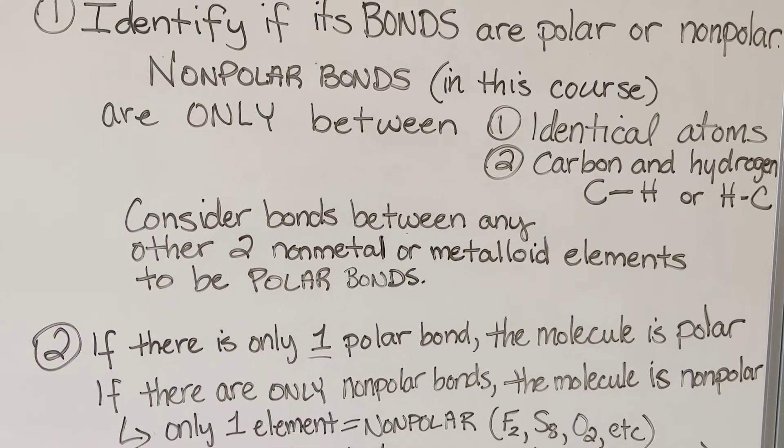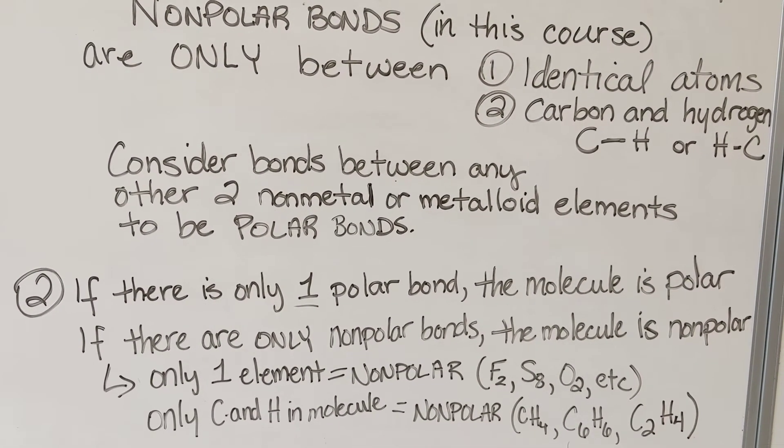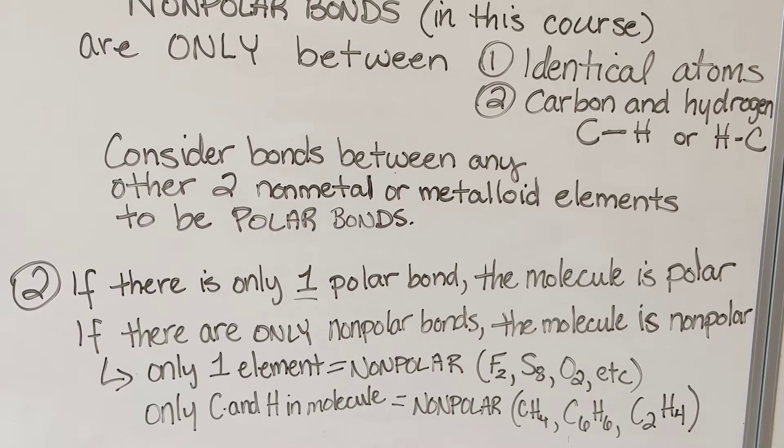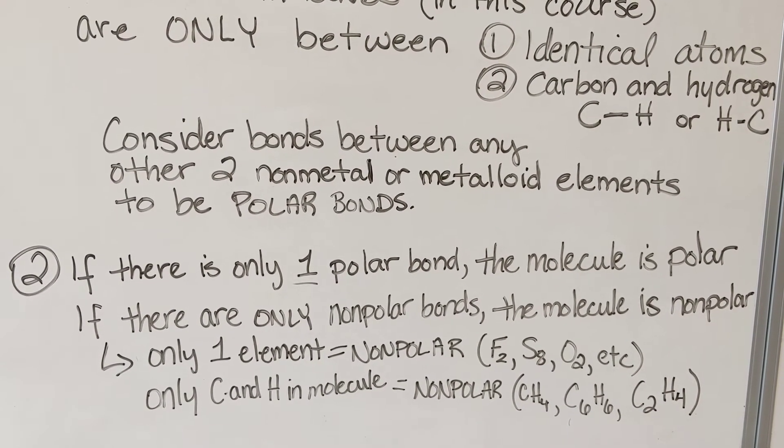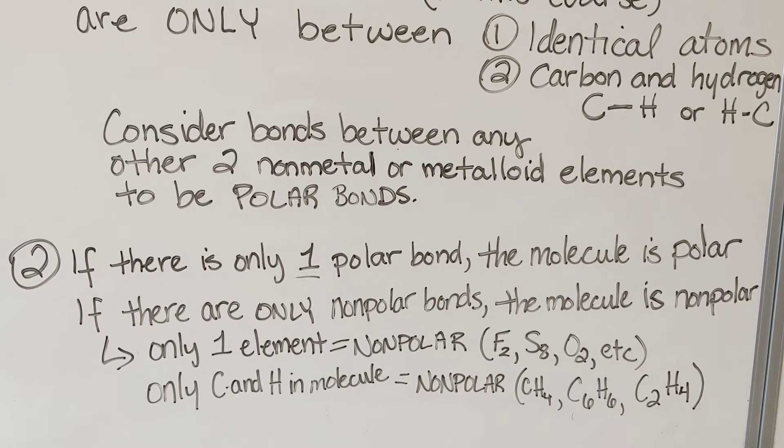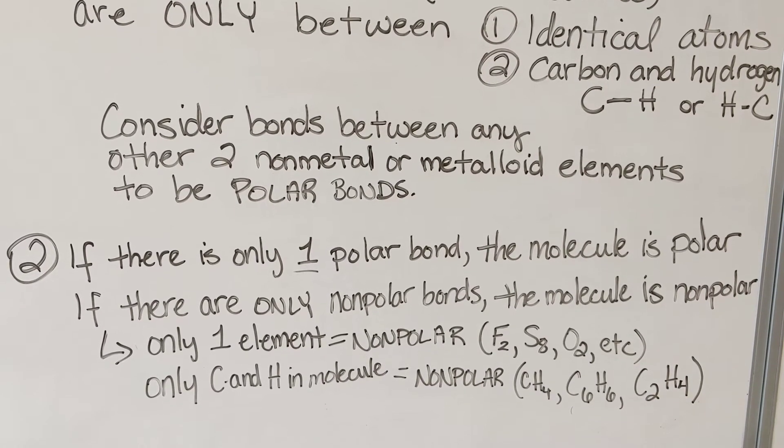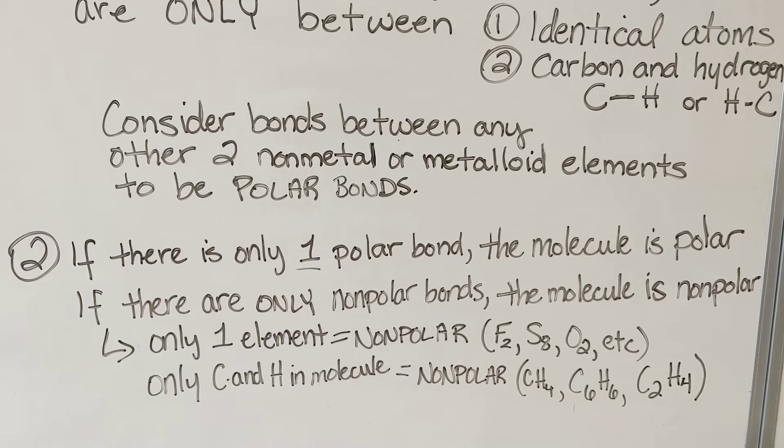Step two: if there is only one polar bond, your molecule is polar. If there are only nonpolar bonds, then the molecule is nonpolar. So that would occur if there's only one element, then it must be a nonpolar molecule.